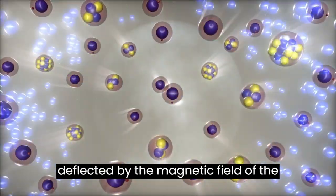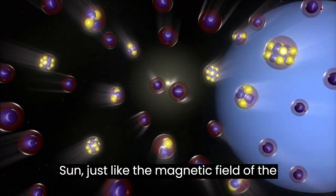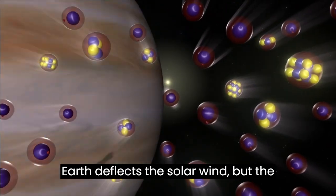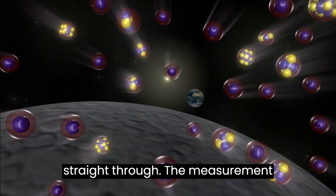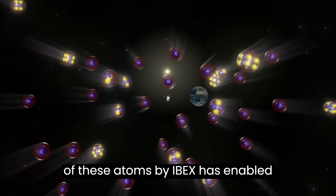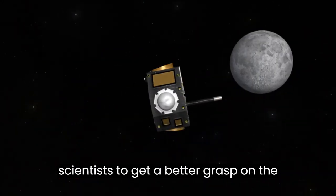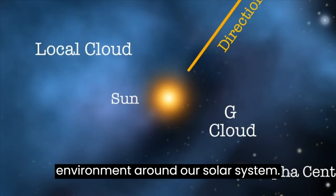The ions are deflected by the magnetic field of the Sun, just like the magnetic field of the Earth deflects the solar wind, but the neutral atoms are unaffected and go straight through. The measurement of these atoms by IBEX has enabled scientists to get a better grasp on the environment around our solar system.